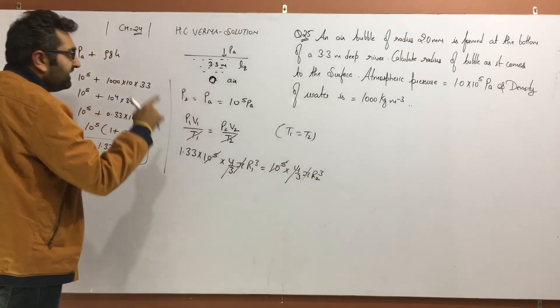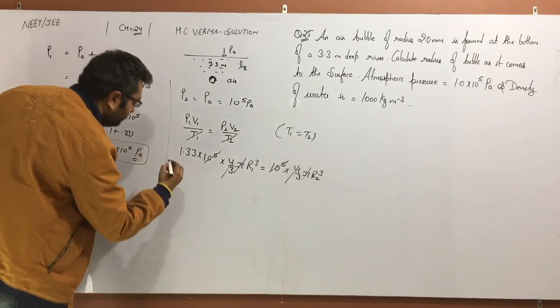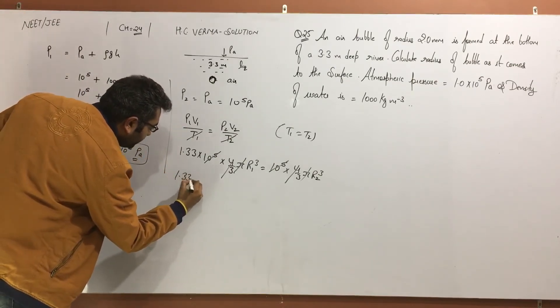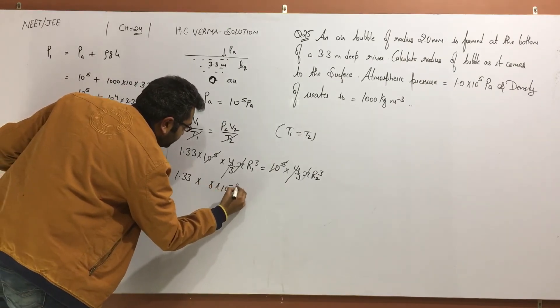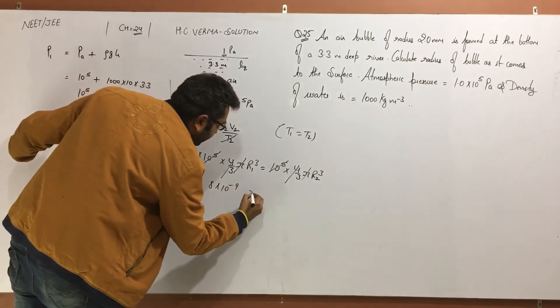R radius is given as 2 mm. Converting to meter, it's 2 × 10^-3 meter, and cubing it gives 8 × 10^-9.